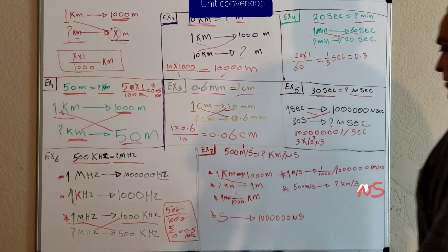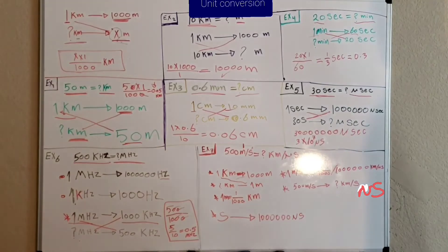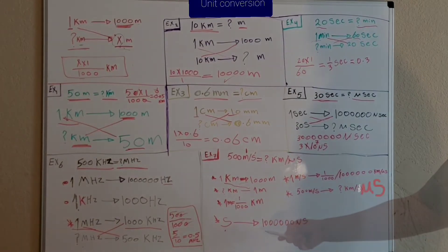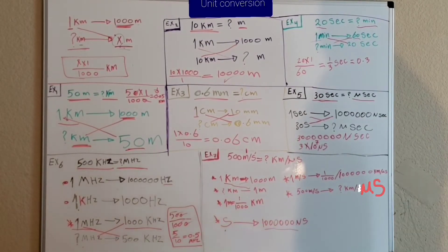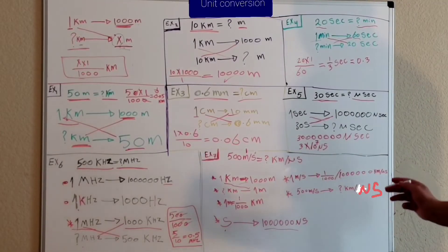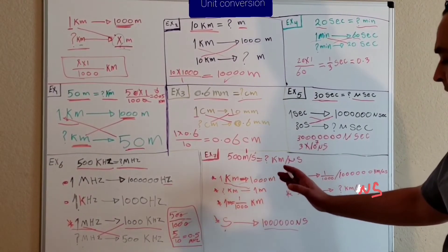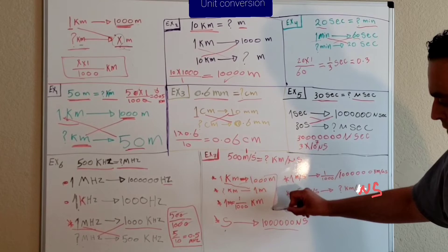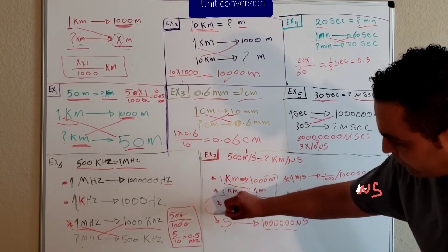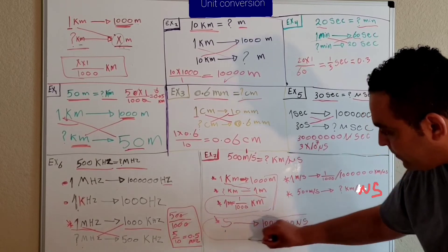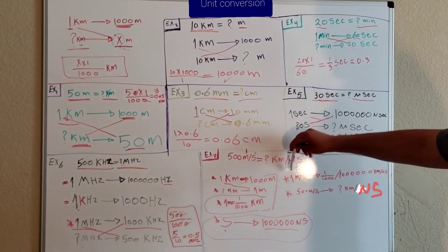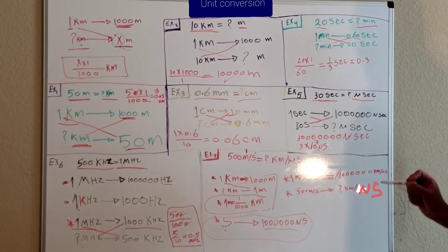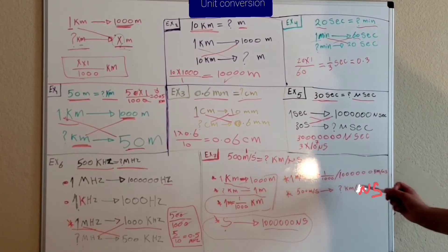Next, we convert the time unit. We know that one second equals one million microseconds. We then put the distance conversion and the time conversion together to conclude the overall conversion factor: one meter per second equals one over one thousand for the distance, divided by one million for the time.